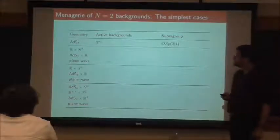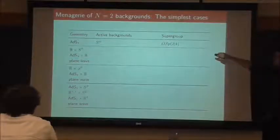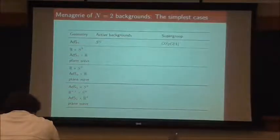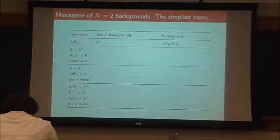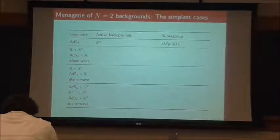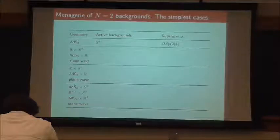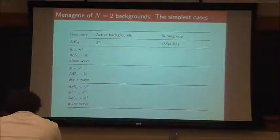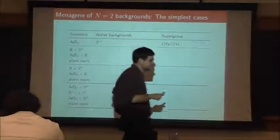AdS₄ comes from when S_{IJ} is turned on. That involves the supergroup OSp(2|4). If you've never seen this notation before: the bosonic part of OSp(2|4) is Sp(4) times SO(2). This is for AdS₄. Sp(4) is the same thing as SO(5), which is approximately SO(3,2) to physicists. So this is the spacetime group and SO(2) is the R-symmetry group — that's the bosonic part of OSp(2|4).